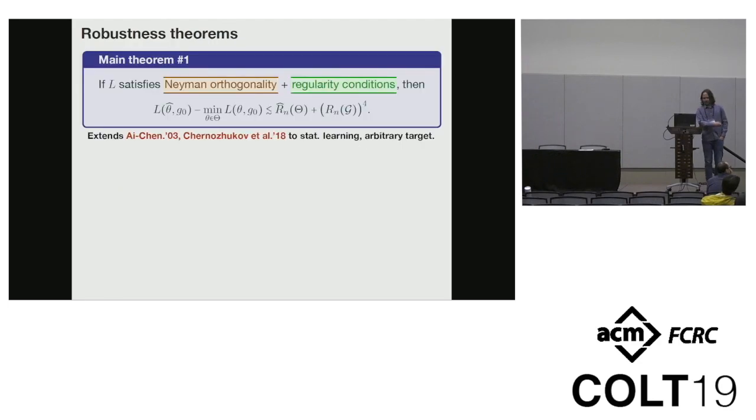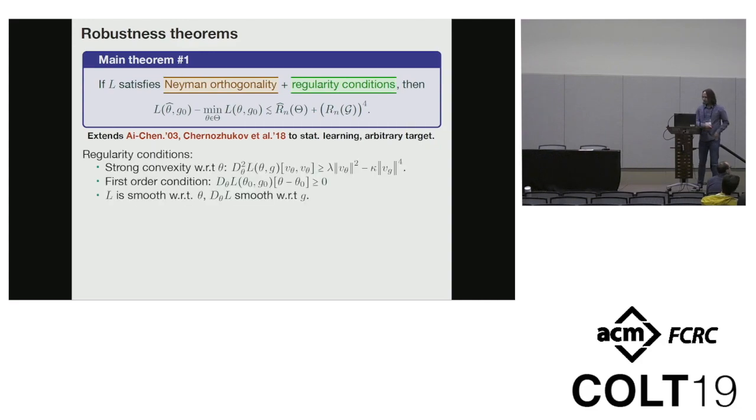Our first robustness theorem says that if the loss satisfies Neiman orthogonality and some regularity conditions, then the rate you get is essentially the risk for the target class, plus the rate for the nuisance class to the power of four. So you can basically make your nuisance class polynomially larger than the target class without messing up the excess risk. This requires strong convexity with respect to the target, the usual first order condition, and some basic smoothness assumptions.